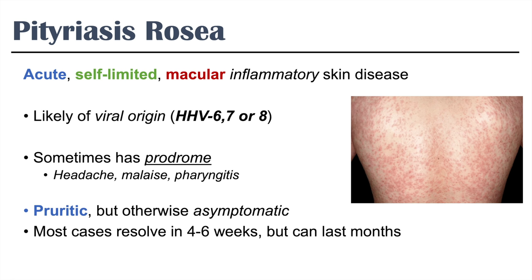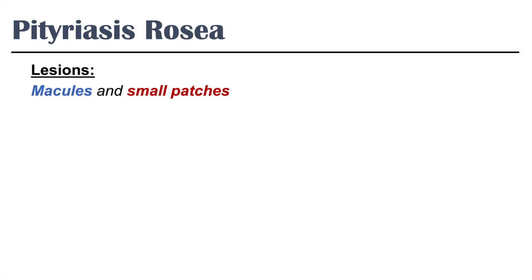Skin lesions in Pitoriasis Roja are macules and small patches. Macules are flat skin lesions that are less than 1 cm in size, and small patches are flat skin lesions that are generally 1 cm or greater in size.